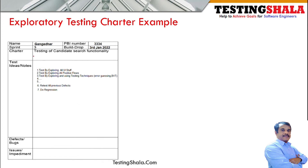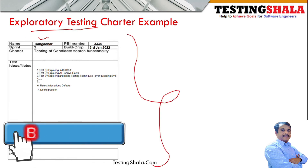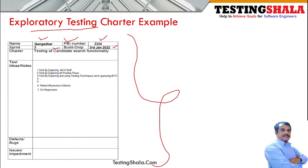The exploratory testing charter would look something like this. The charter will have the name of the tester, the PBI number, which sprint the user story belongs to, which build drop the exploratory testing is being performed against, what kind of functionality is being tested, and what various testing ideas or methodologies will be adopted to perform this exploratory testing.